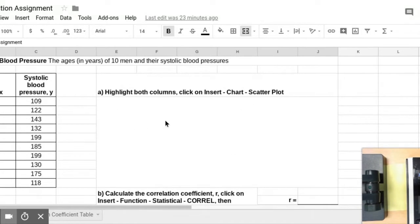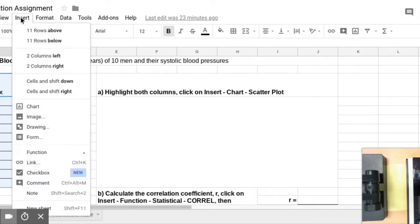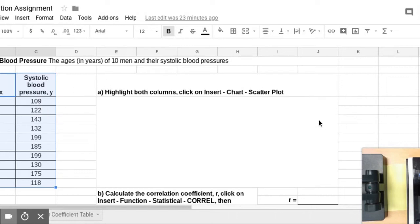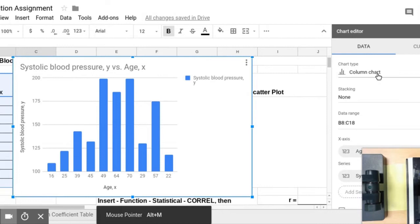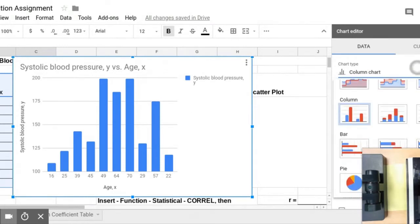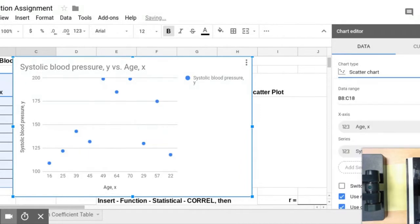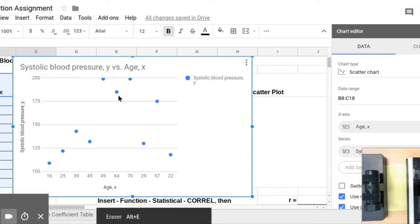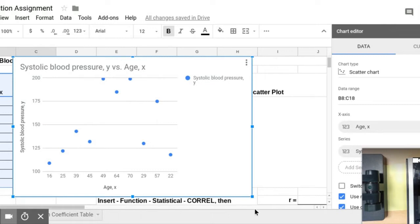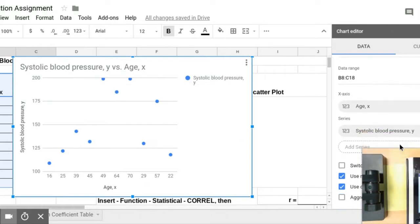Okay, so this is Example Problem Number 1 on the assignment, and I'm working through it all the way so you can see what you would do. So we first want to create a scatterplot. We are going to highlight both columns and then go to Insert, click on Chart, and then once it pops up, you will need to change the Column Chart selection to a Scatter Plot, which is further down. And you want to make sure that it is showing the x and the y.